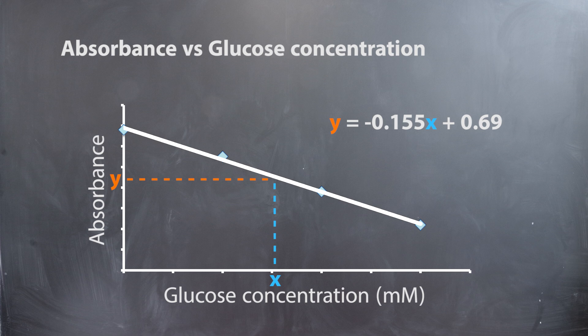For example, in this graph, if the absorbance of the unknown was 0.300, then you could use the formula for the standard curve, which is shown here, and plug that into the y-value and obtain a concentration of 2.52 millimolar. Be sure to have a detailed graph, legend, and axis titles with units.